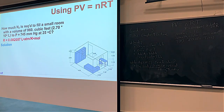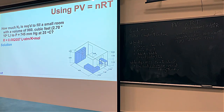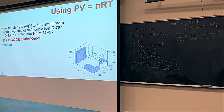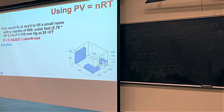We'll add 273 to the Celsius temperature to make it Kelvin. Then we're going to solve for N, the amount of gas, which comes out in moles. And from moles, we can convert to grams or kilograms using the molar mass of N₂.